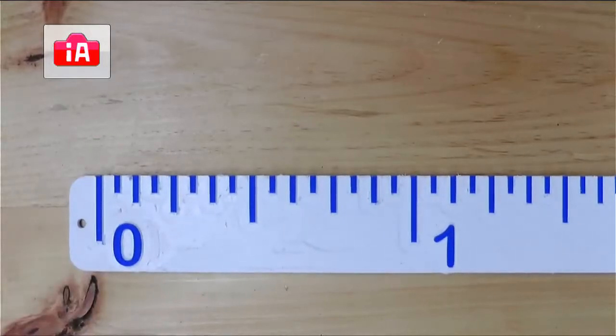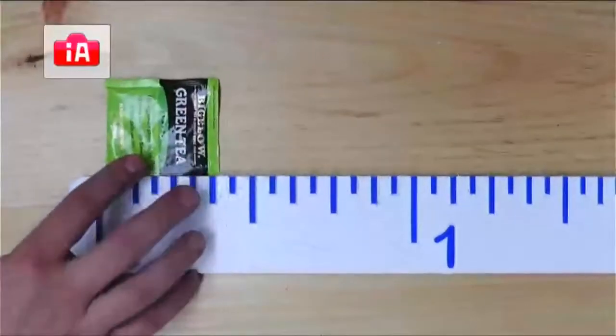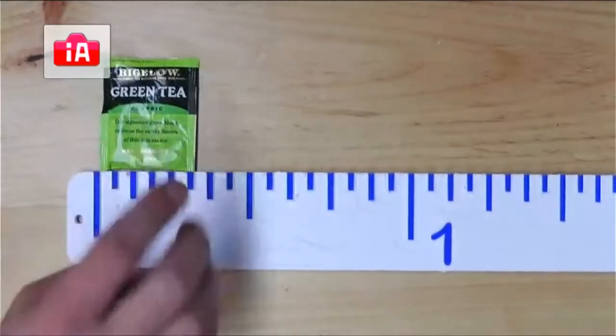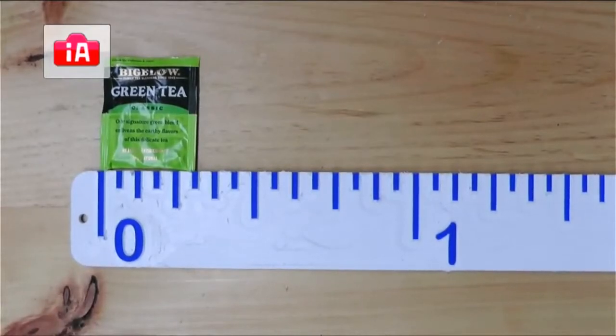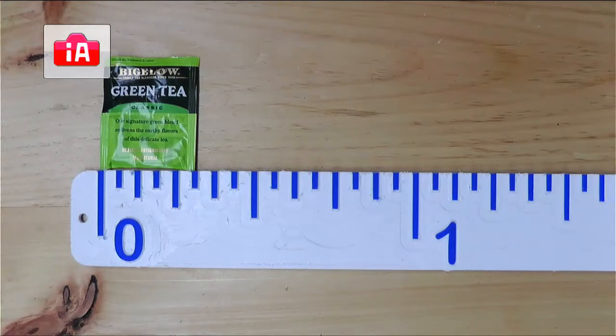So what we're going to do, and this first one is just an example. So I'm going to take objects. I'm going to put them on here. And I'm going to say, hey, to the nearest sixteenth of an inch in the chat, what is the answer for that one right there? What is the width of that teabag? All right, five sixteenths of an inch. Excellent.